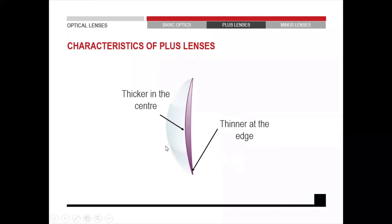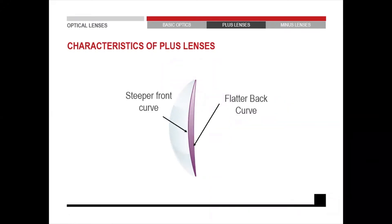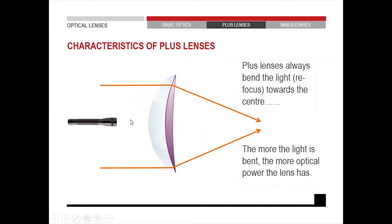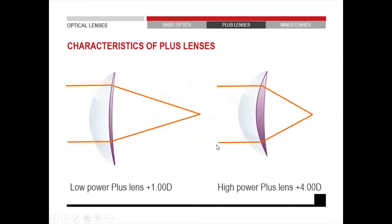Looking at a plus lens in more detail: it's thick in the center and thin on the edges because the front surface is steeper than the back surface — it's curved more on the front than the back. Whenever light enters a plus lens, the light rays will be bent towards each other to form an optical image at the back of the lens. We also get different powers of plus lenses — the plus 1 is thinner in the center than the plus 4, so the stronger the lens, the thicker the plus lens will be in the center.